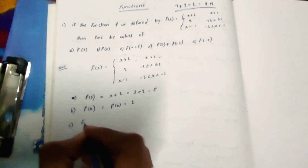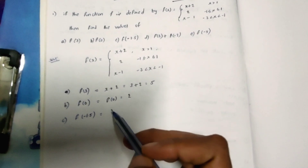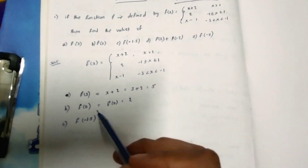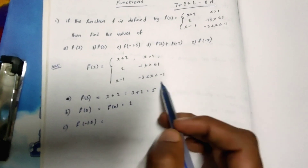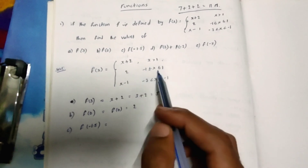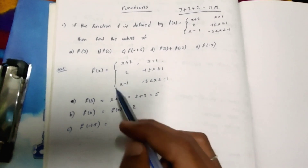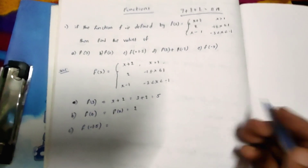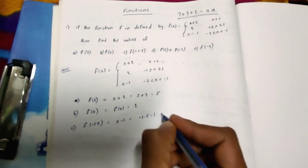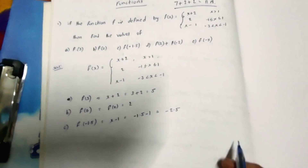Let's substitute f of minus 1.5. Here we have minus 1.5. We have to check which of the three equations is satisfied. Minus 1.5 is less than 1 and falls in the range for x minus 1. So we use x minus 1 and substitute: minus 1.5 minus 1 equals minus 2.5. That is the answer for c.